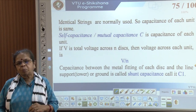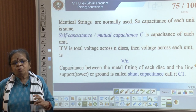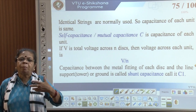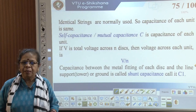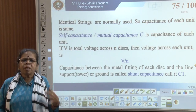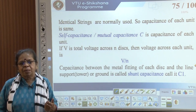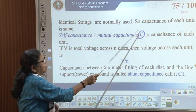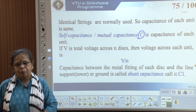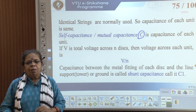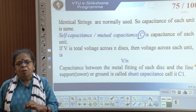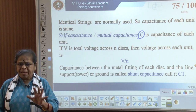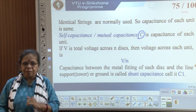From a manufacturing perspective, we use identical strings so that if a disk is damaged, you can easily replace it with another disk. That is the idea of using identical disks. Now, is there some price we pay because of this? Let us define the capacitance C as the capacitance of each unit, each disk. The voltage across each disk would be V by N, where V is the total voltage across all the disks. But is this really the case? Let us find out.